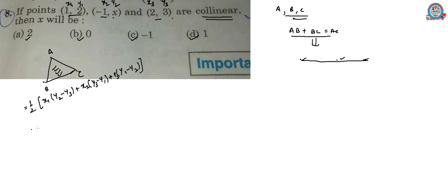After substituting the values we get half of [1(x minus 3), minus 1(3 minus 2), plus 2(2 minus x)].